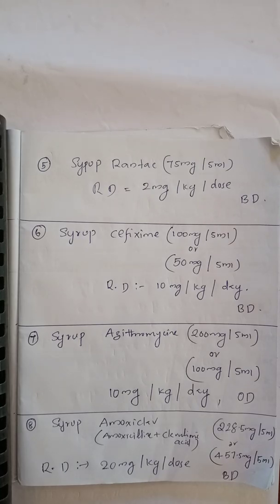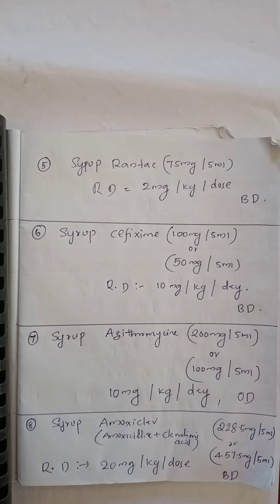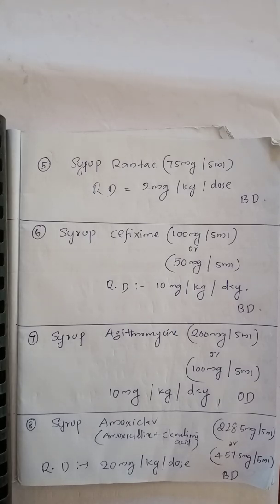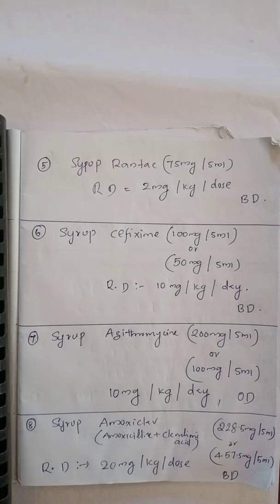Next is syrup azithromycin. Available strength is 200 mg per 5 ml or 100 mg per 5 ml. The recommended dose is 10 mg per kg per day, given once daily — so we give the complete dose once daily: 10 mg per kg per dose, once daily.